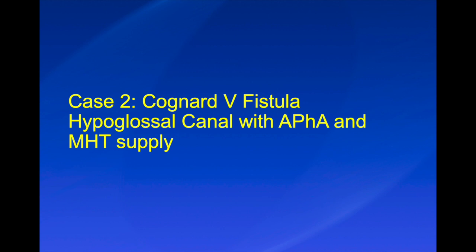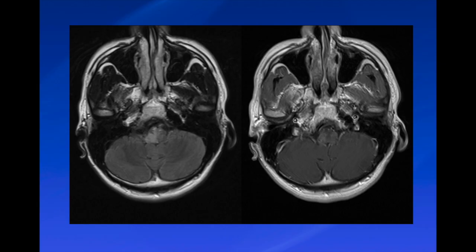Case two is a Cognard type 5 fistula located in the hypoglossal canal with ascending pharyngeal artery and meningohypophyseal trunk supply. A Cognard type 5 fistula is one that has spinal venous drainage. The MRI shows high signal and patchy enhancement of the medulla. This patient had multiple misdiagnoses prior to discovery of the fistula, including CLIPPERS, lymphoma, and infectious processes.